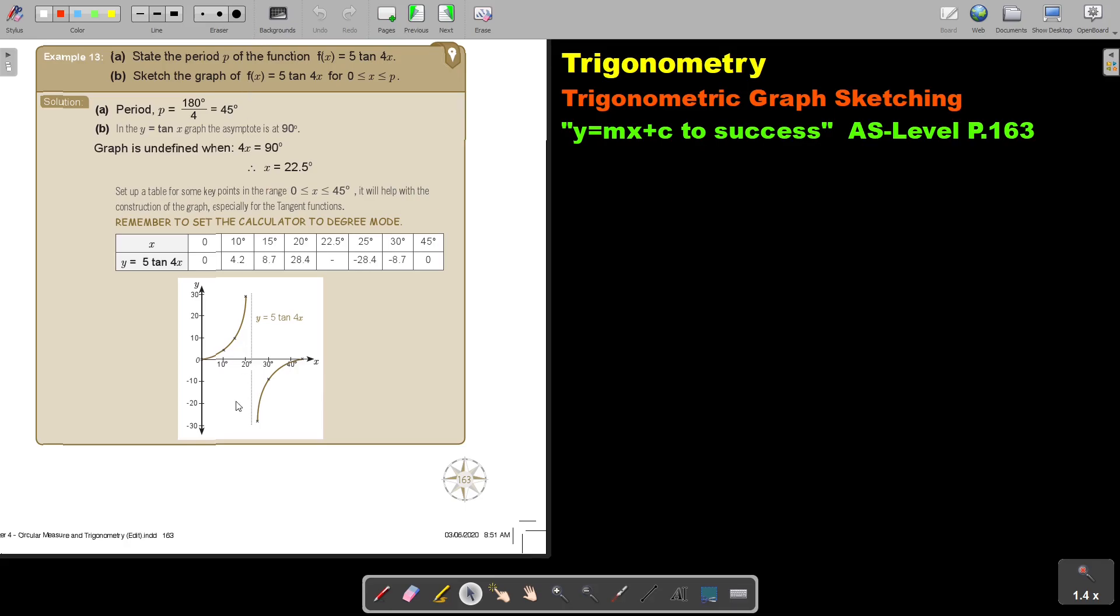Let's look at another example. State the period p of the function fx equals 5 tan 4x. Sketch the graph of fx equals 5 tan 4x for x bigger and equal to 0 and smaller and equal to e. Now, what is the period?